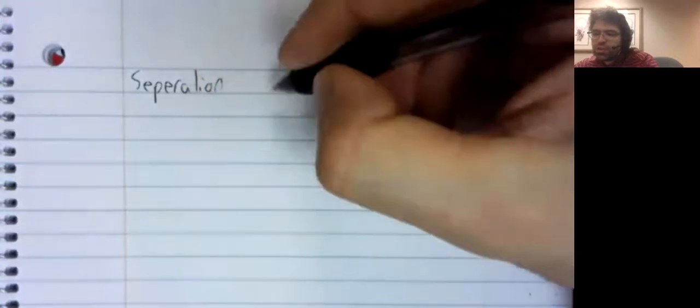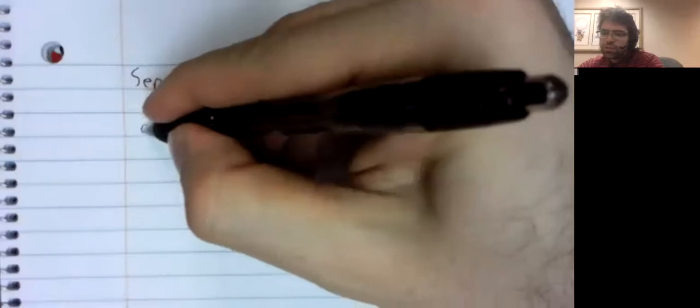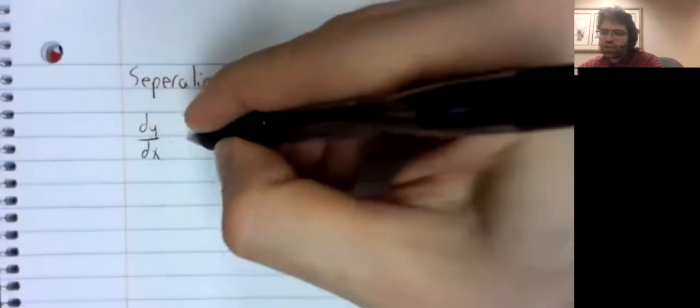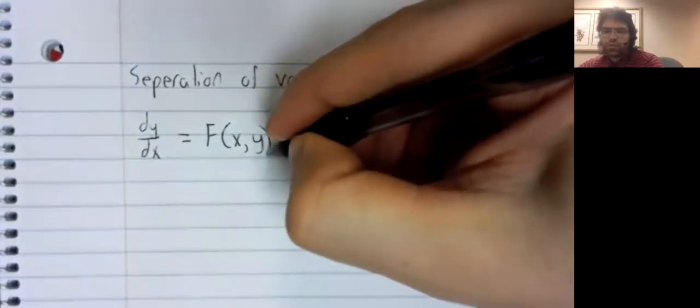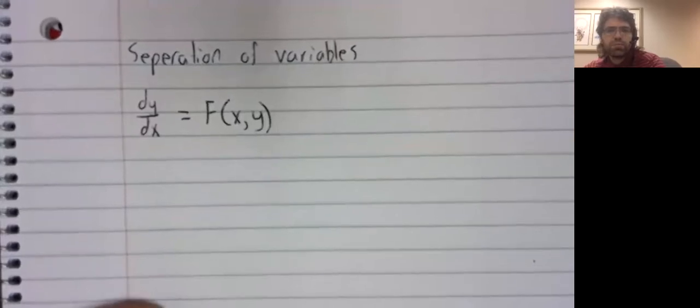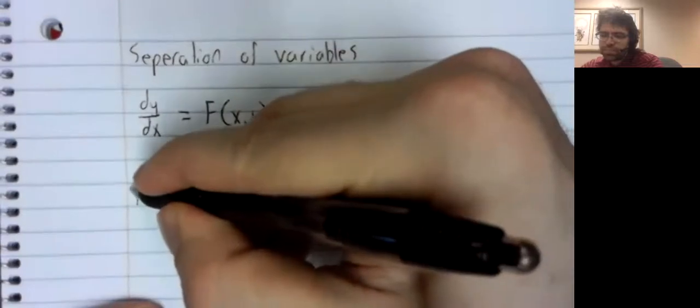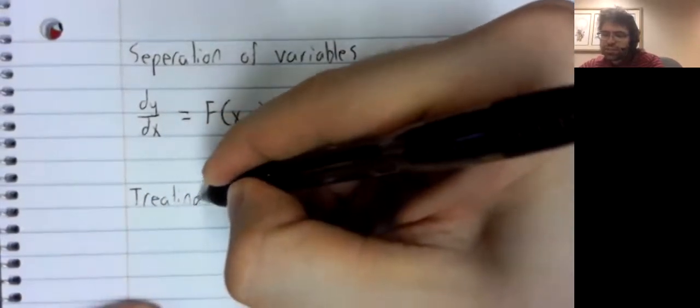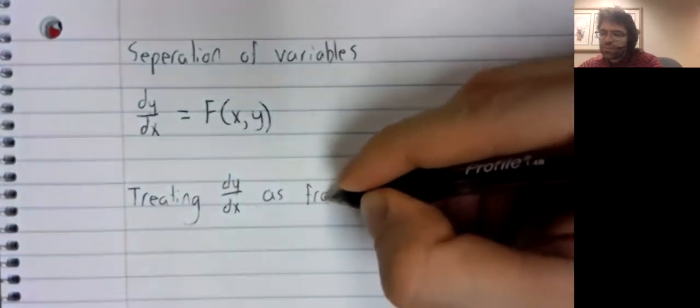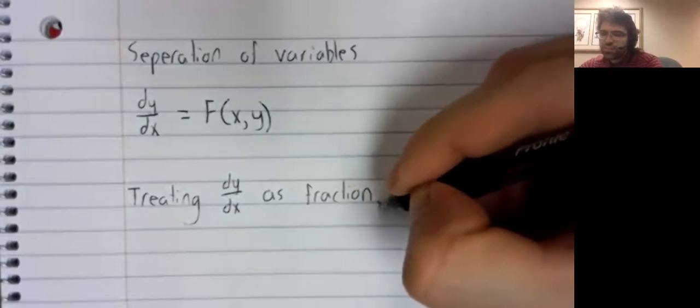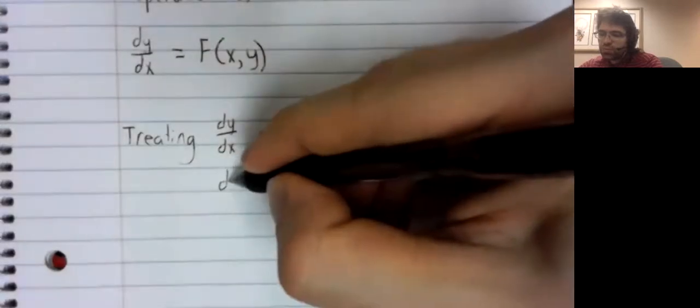Let's summarize. Separation of variables. So you have some differential equation. And on the right, you have your dependent and independent variables mixed together. We are treating dy dx as a fraction, even though we know we shouldn't.